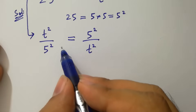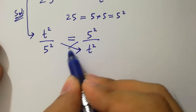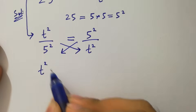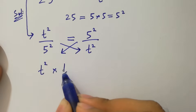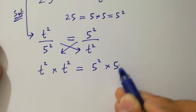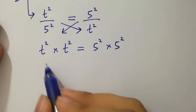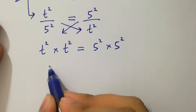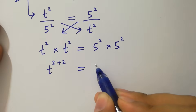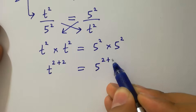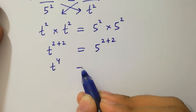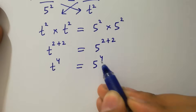By cross multiplication, we have t squared times t squared equal to 5 squared times 5 squared. Using the rule a to the power z, it will be t to the power 2 plus 2 equal to 5 to the power 2 plus 2, so t to the power 4 equal to 5 to the power 4.